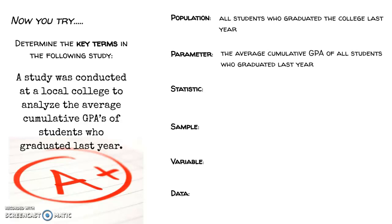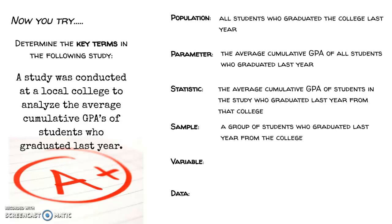That becomes a statistic once we take a sample. So the average cumulative GPA of students in the study who graduated last year from that college is the statistic. So it's just the ones who we sampled, who we took in our study. So the sample is that group of students who graduated last year from the college. Maybe we didn't take all of the students who graduated last year, we just took a sample. The variable, the thing that we're interested in studying here, is the cumulative GPA of any random student. So we can talk about any student's GPA and that is the variable - just any student who graduated last year. And the data would consist of a sample of graduated students' GPAs. So someone had a GPA of 3.45, 2.98, etc.